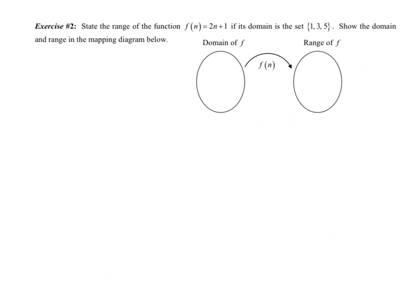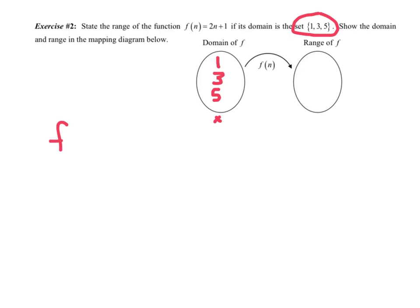Exercise 2. State the range of the function f(n) = 2n + 1 if its domain is the set {1, 3, 5}. Show the domain and range in a mapping below. We'll draw a circle, put our domain or x values here, and draw arrows to our range or y values here. Those are my x values and they go in that first circle.